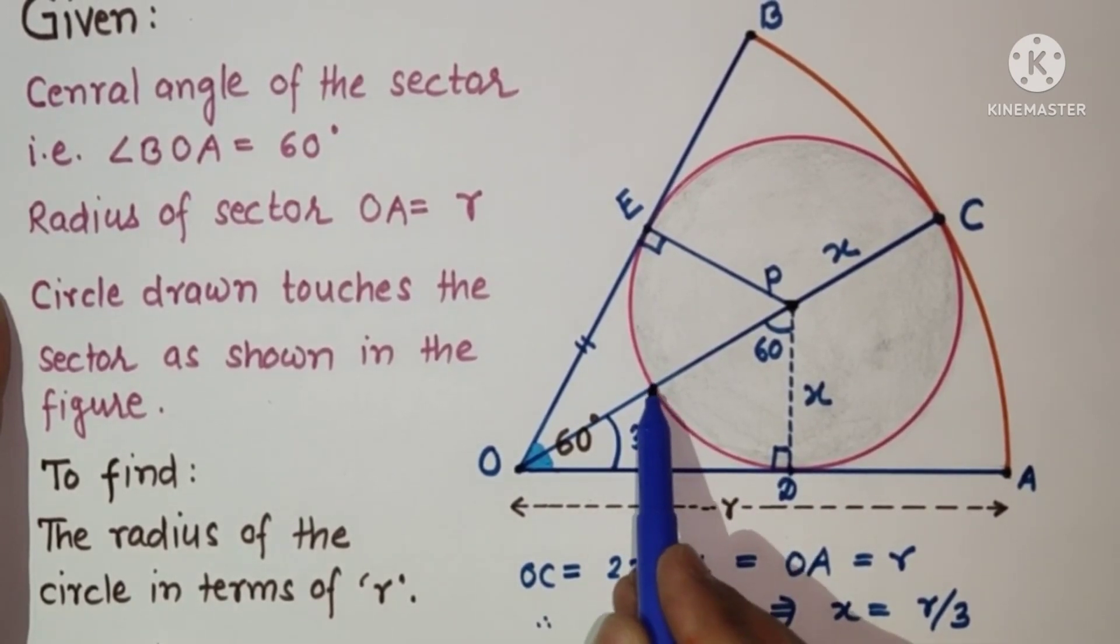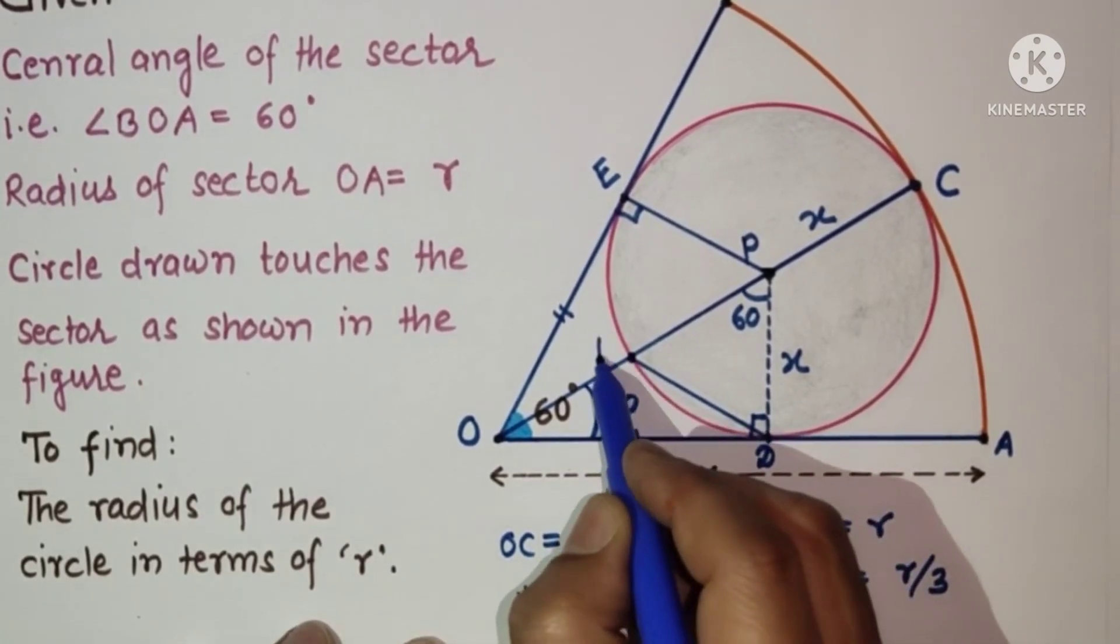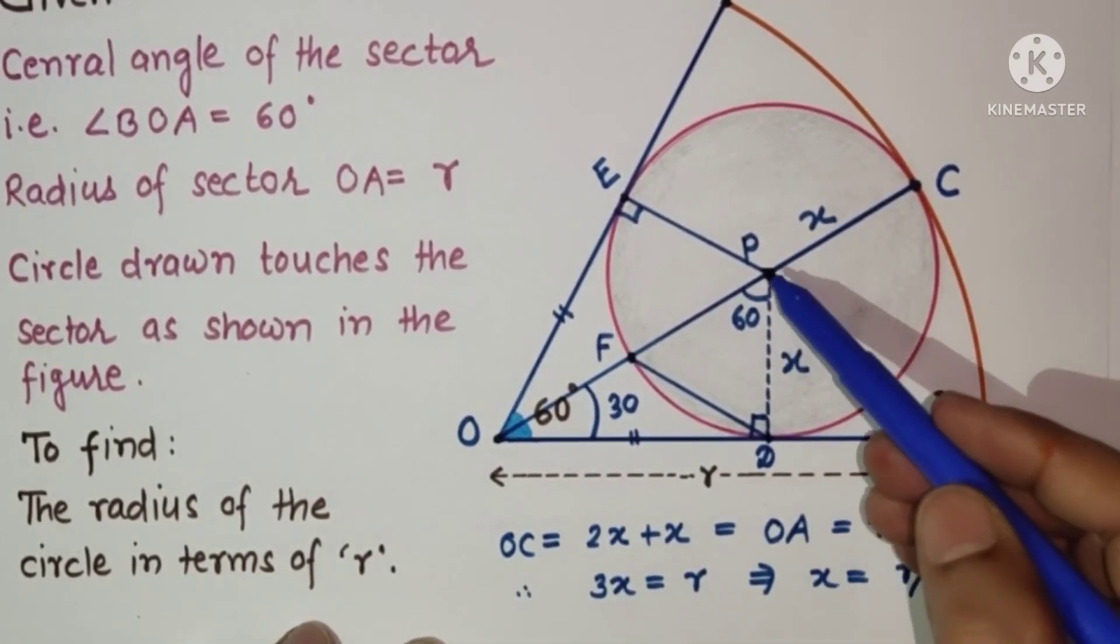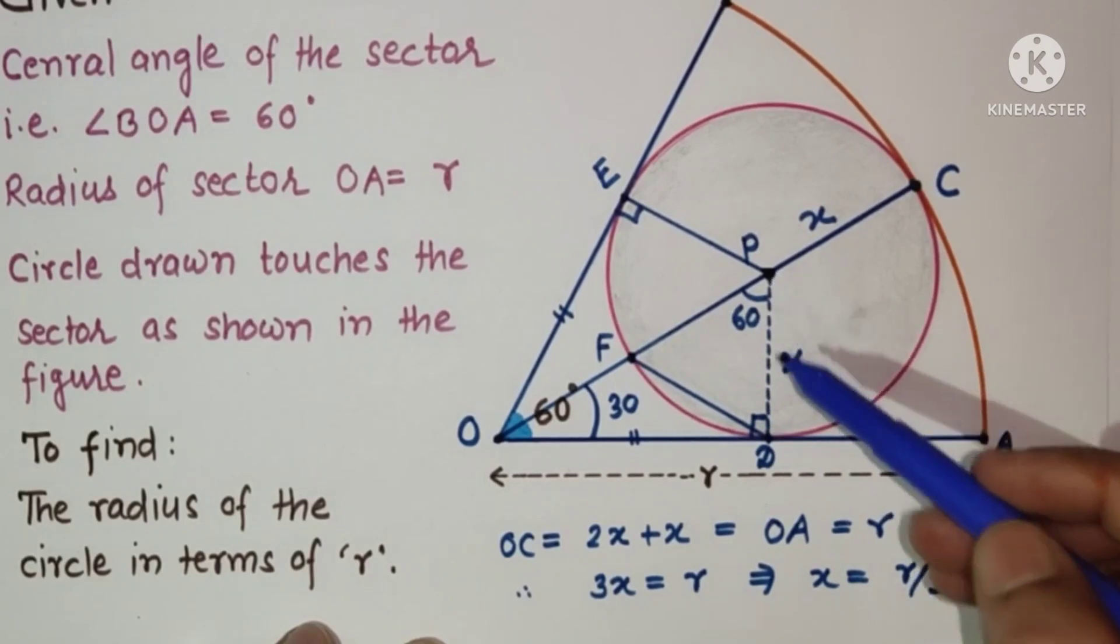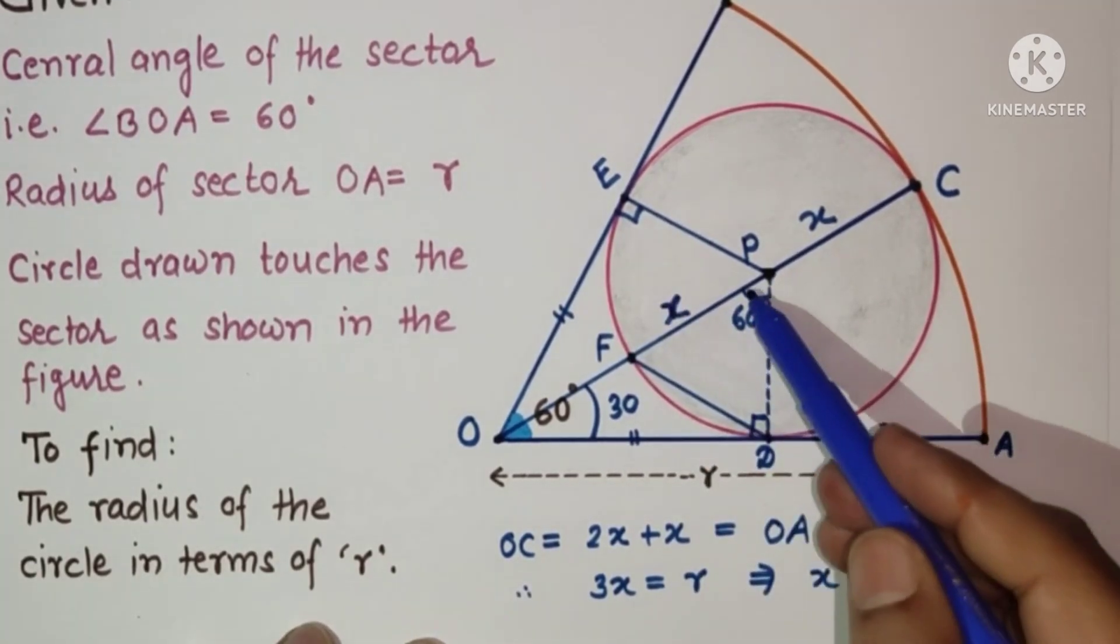Let us suppose this is F. So PF and PD both are equal, this is also X, this is 60 degrees.